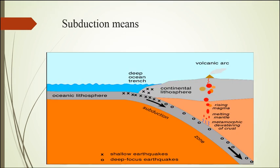Subduction is illustrated in the picture I have uploaded. The oceanic lithosphere is shown in blue representing the ocean, and on the right side is the continental lithosphere. The subduction zone is shown in the inner part like a tube. In the red diagram you can see the volcanic arc; the cross shows shallow earthquakes and the circle shows deep focus earthquakes.